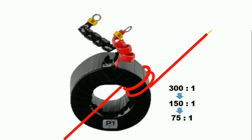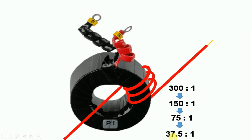Now suppose we have to reduce the ratio again. We add one more turn around the CT. The ratio will become half of 75 by 1, that is, 37.5 by 1. So in this way, we change the ratio of CT.